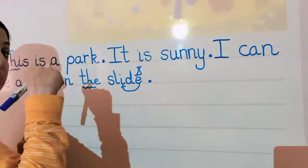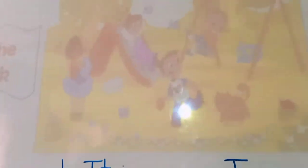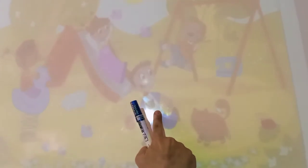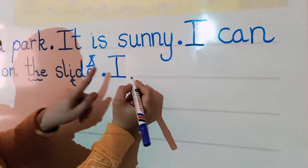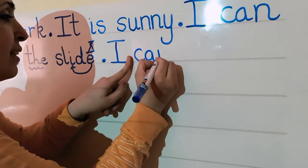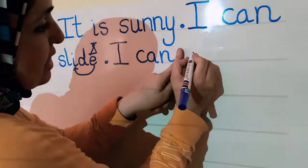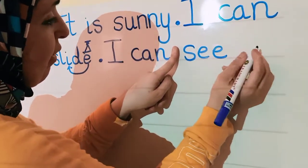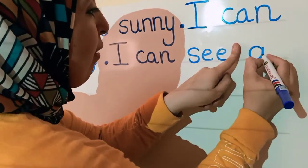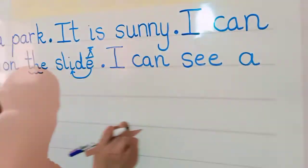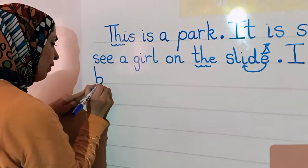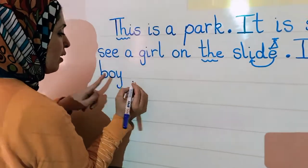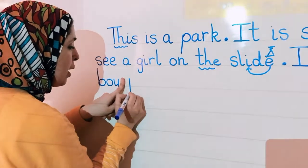After the full stop, a capital letter. I can see a boy playing with the cat. Capital I. Now. I, can, see, a. I have no space. I have to go to the next line. A, boy. Put my finger.